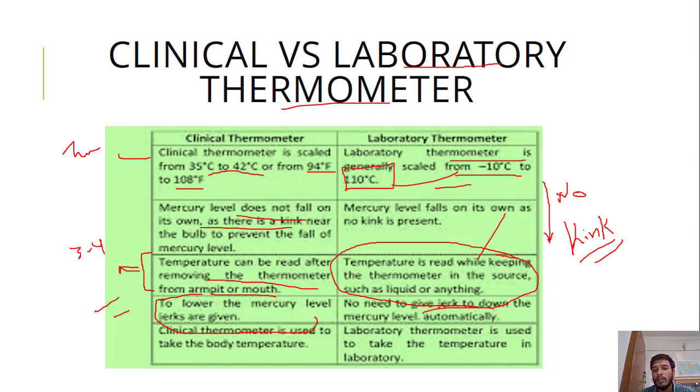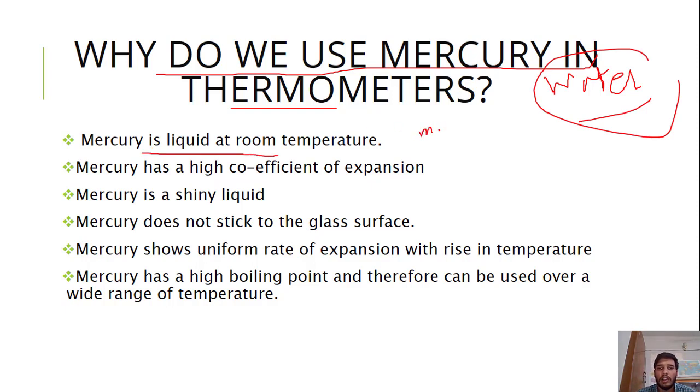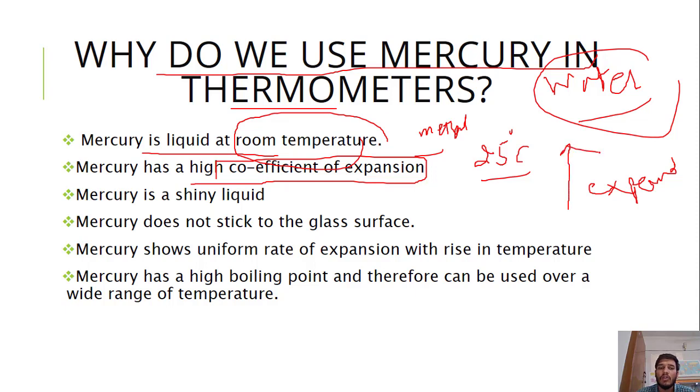Why do we use mercury in thermometers? Why not water? Mercury is liquid at room temperature. Room temperature is 25 degree Celsius. It has a high coefficient of expansion. As soon as heat is given, this metal expands. When expansion happens in capillary, it will rise, mercury will go up. Mercury is a shiny liquid so it helps in easy identification on Celsius scale.